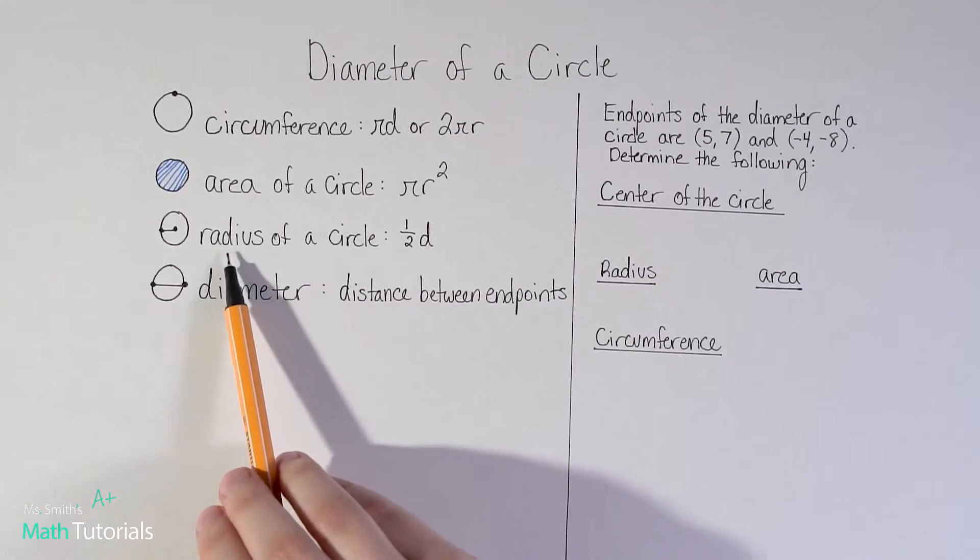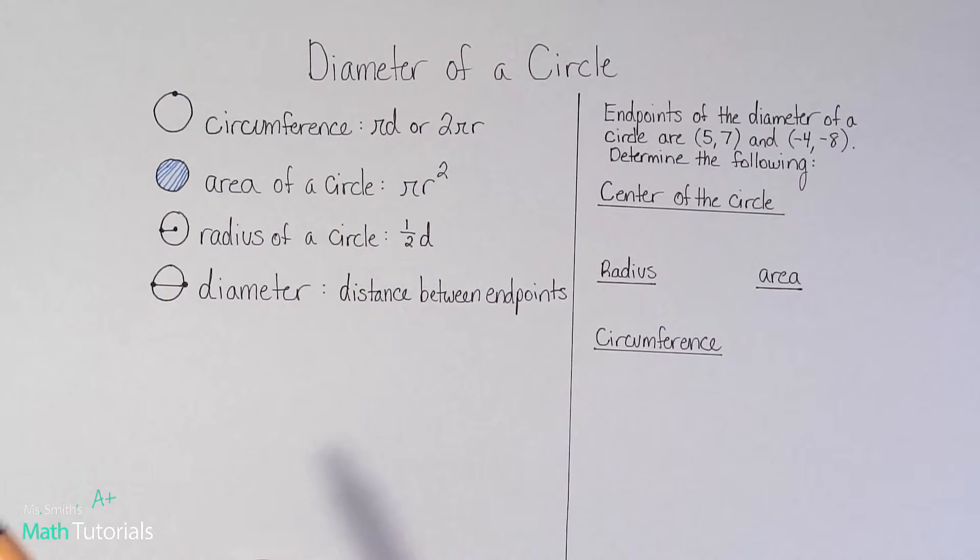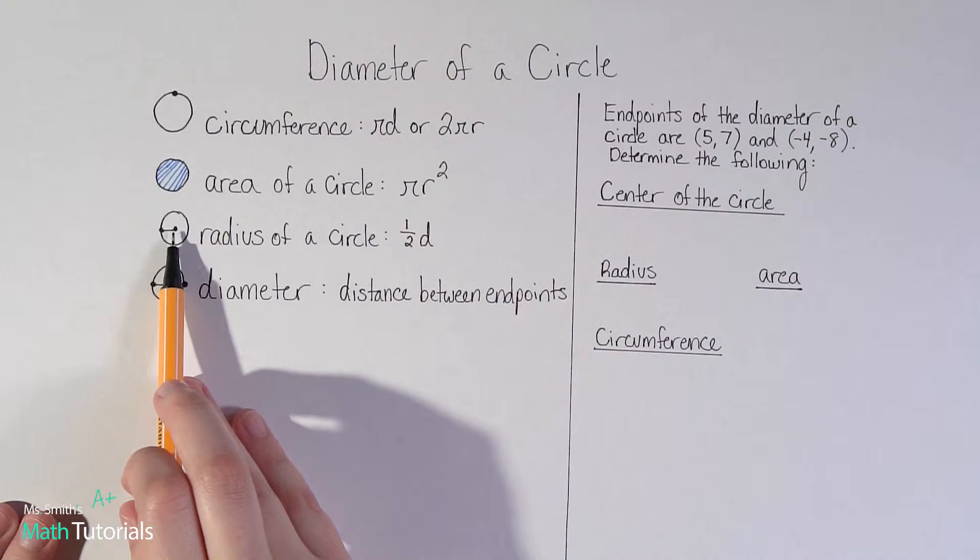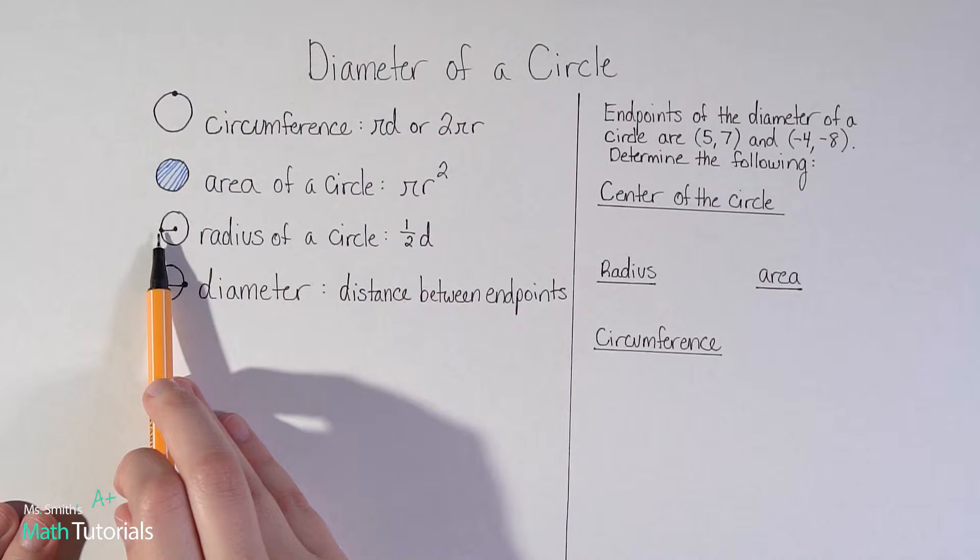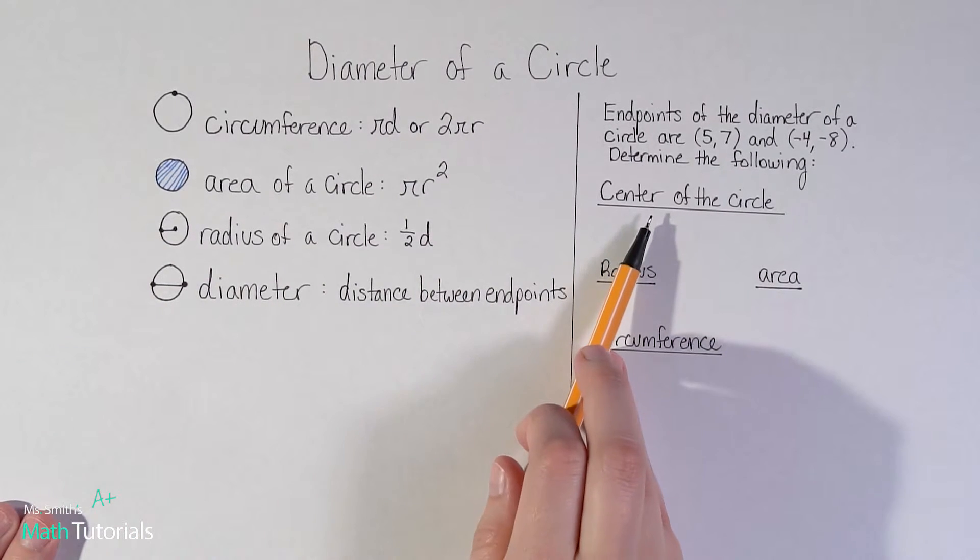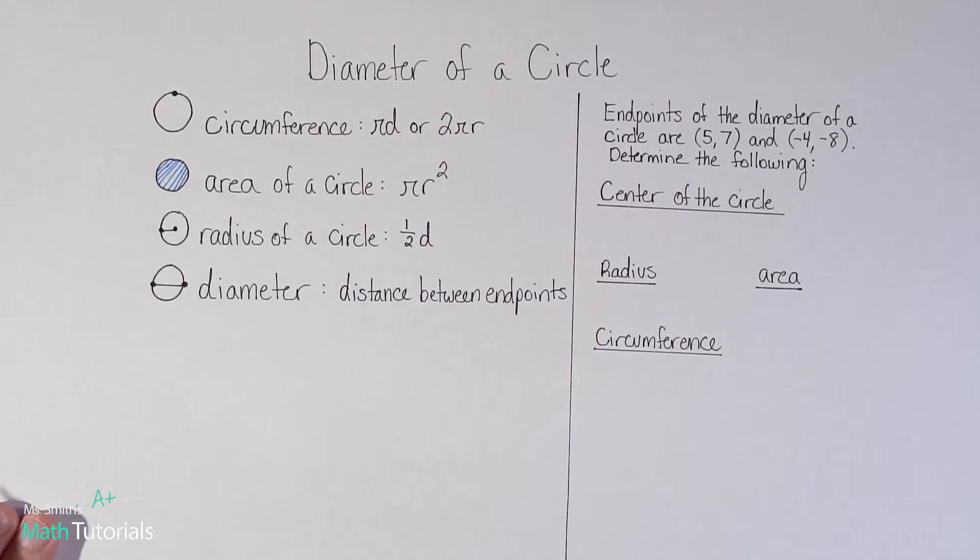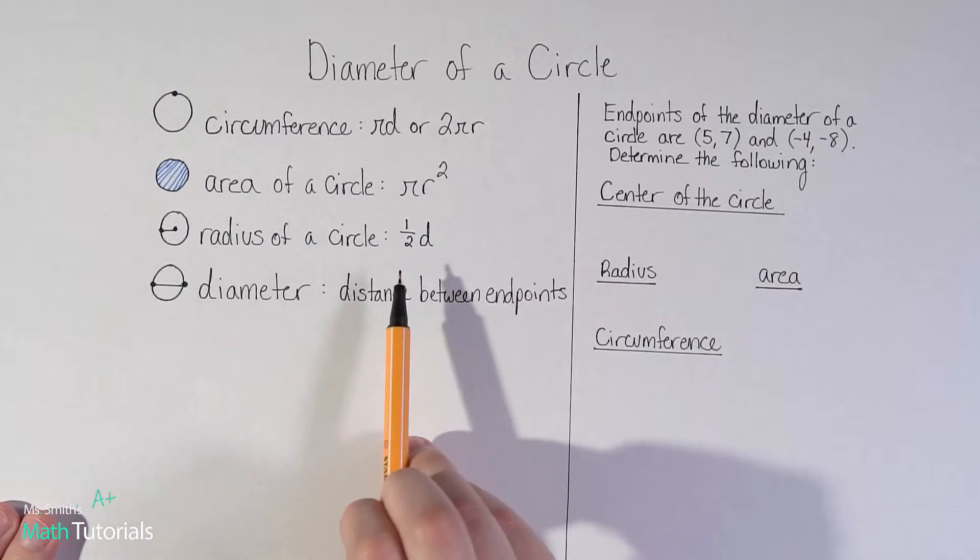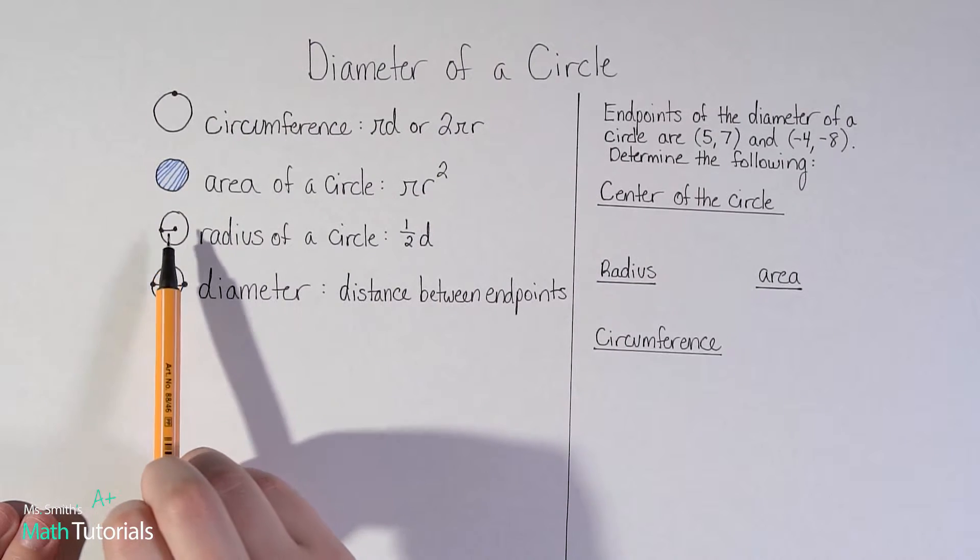And r stands for radius. Now let's talk about radius because it's shown up so far in two of these formulas. Radius of a circle, sometimes students confuse it with midpoint, but don't get those confused. Radius is the distance from one end of the circle to the center of the circle. So it's not a point. It's not asking what is the center of the circle. It's asking what's the distance from the edge to the center. That distance is called the radius.